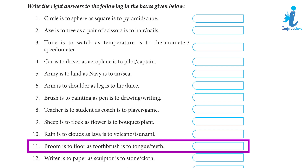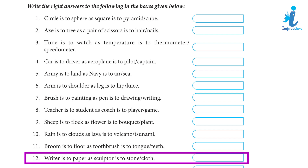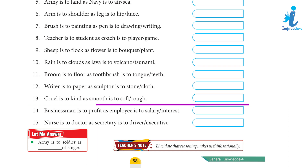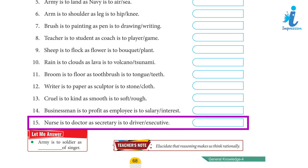11. Broom is to floor as toothbrush is to teeth. 12. Writer is to paper as sculptor is to stone. 13. Cruel is to kind as smooth is to rough. 14. Businessman is to profit as employee is to salary.